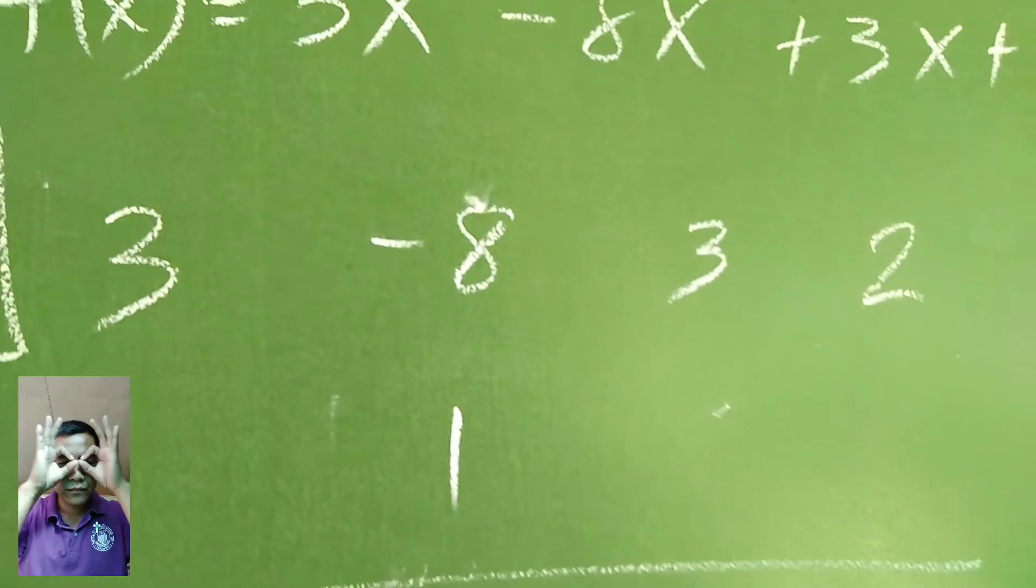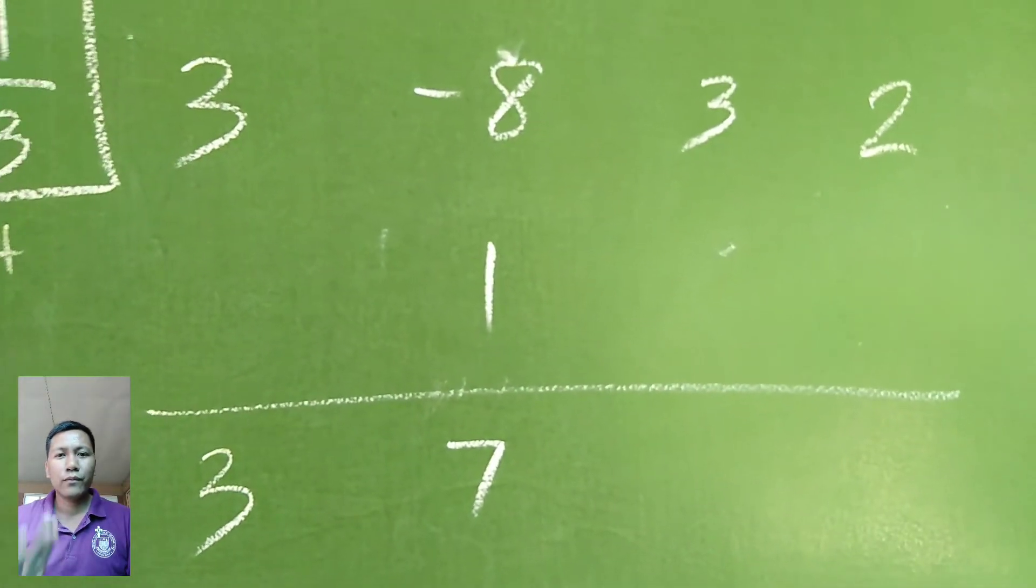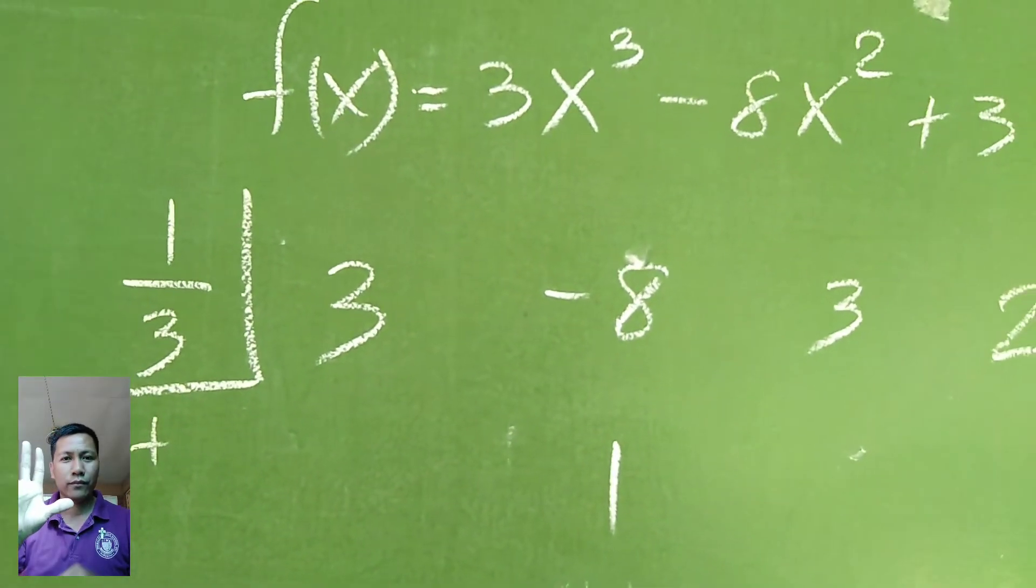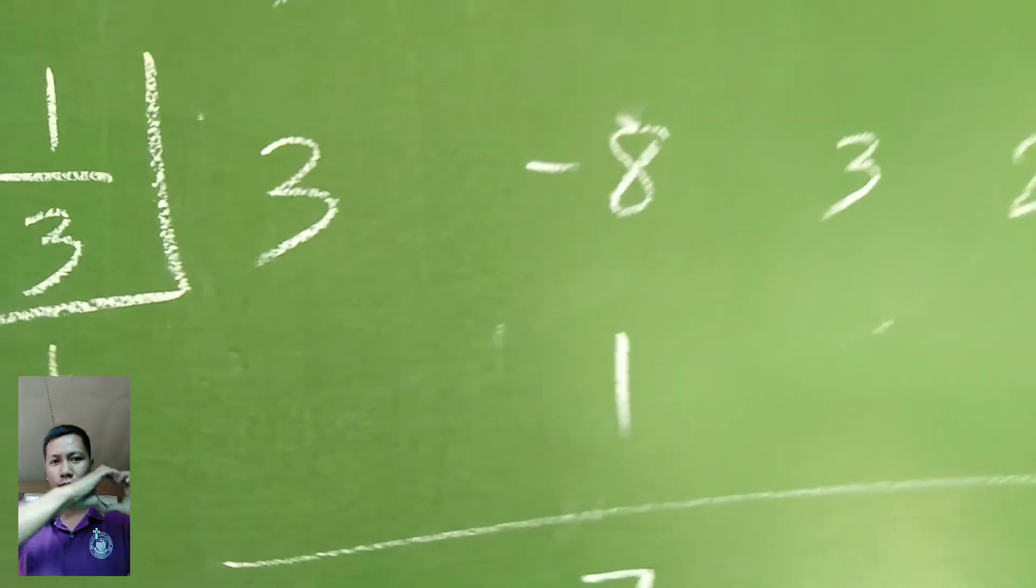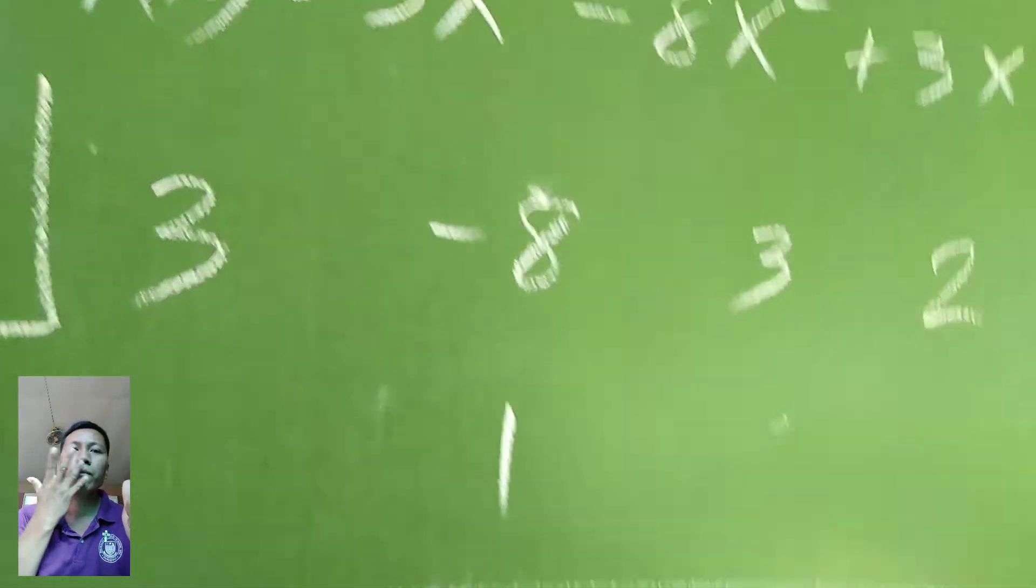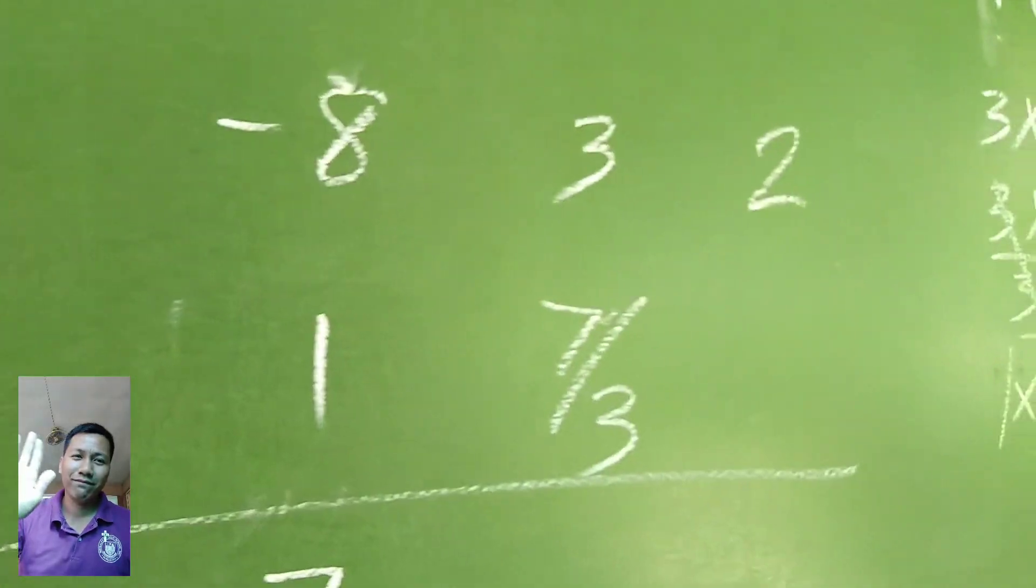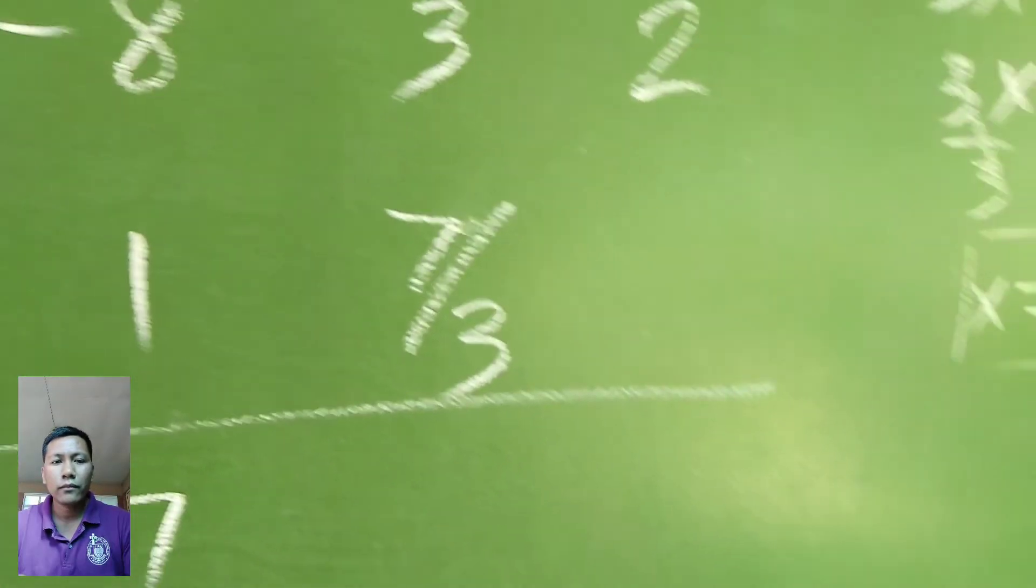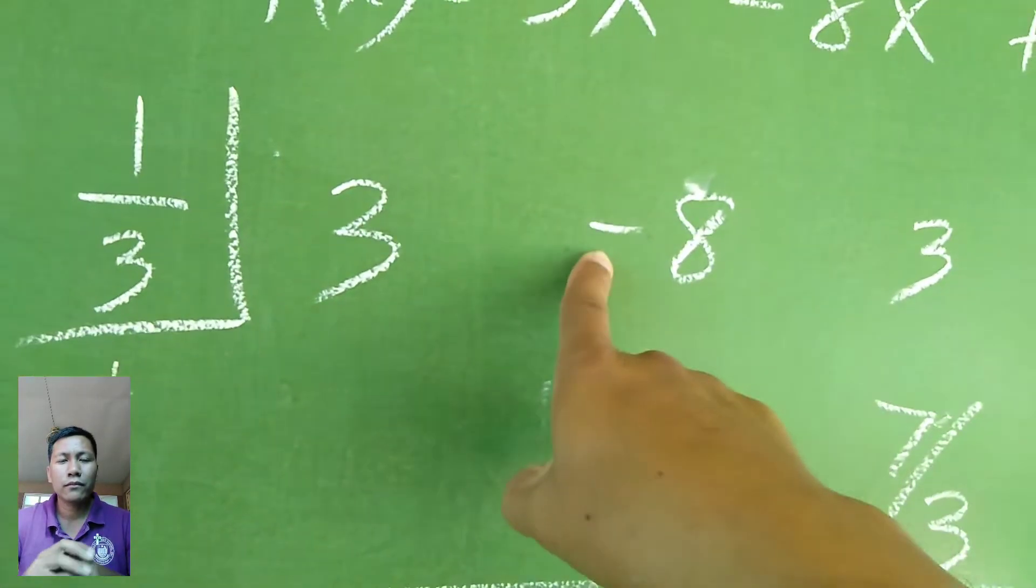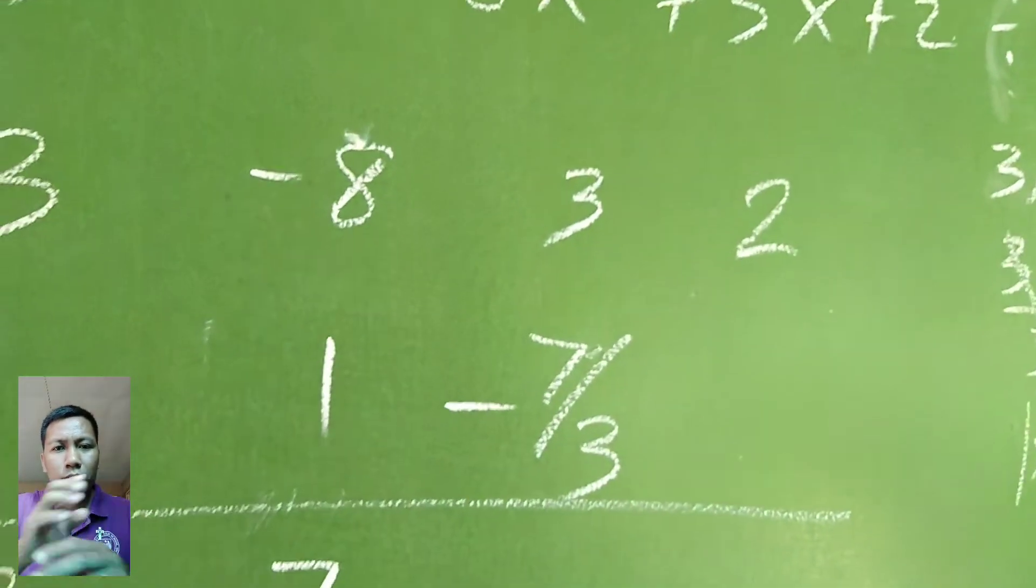3 times 1 third, the answer is 1. Negative 8 plus 1, the answer is negative 7. 7 times 1 third. Some students have difficulty here. What we'll just do is whole number times the numerator. So we have negative 7 over 3.